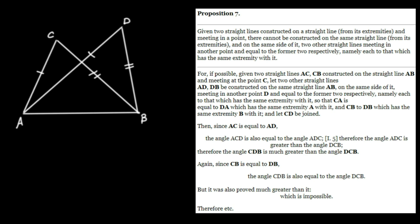Lastly, to complete this construction — which again we're claiming is an absurd construction, it can't be done — we're going to join C to D. We're supposing that we can do this and we're going to bring out the absurdity, and therefore show that this is indeed impossible. Then since AC is equal to AD, notice that from A to C to D we have an isosceles triangle, and we've already proved in Proposition 5 that this angle must therefore be equal to this angle — those two angles opposite the two equal sides.